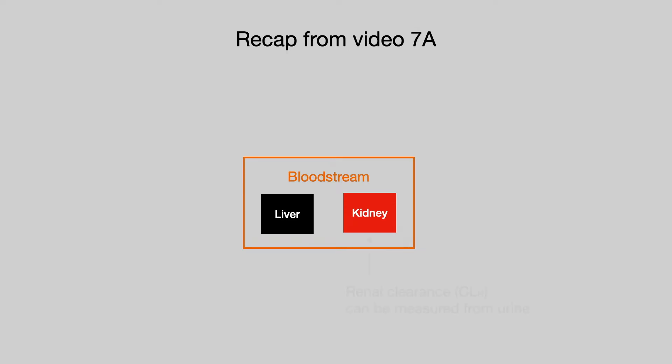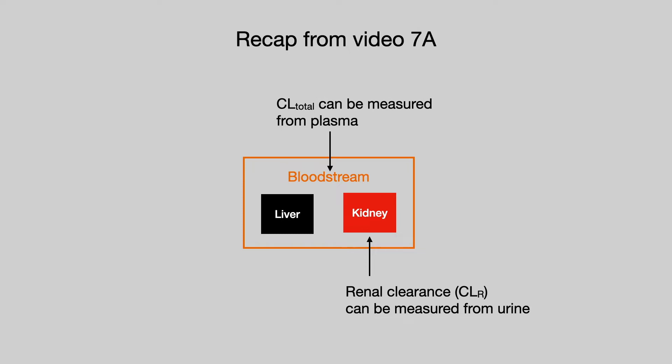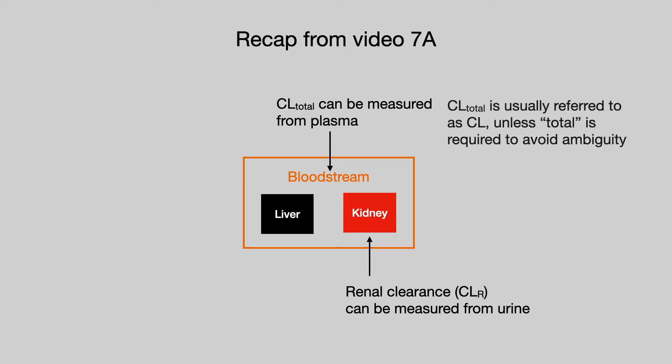We can measure renal clearance from urine. We can measure total clearance from plasma. Total clearance is usually referred to as just clearance, unless the addition of total as a subscript is required to avoid ambiguity. So if you just see clearance by itself, you know it's referring to the total clearance.